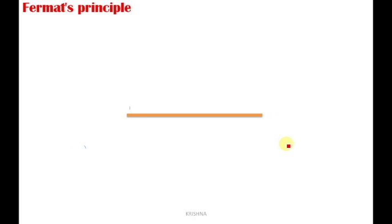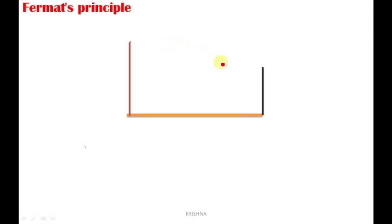Let's take a path — a road. On this road, two poles are there. One is the taller pole and the other is the shorter pole. Between the poles, some food grains are scattered. On the taller pole, there is a crow, and on the shorter pole, there is a nest.